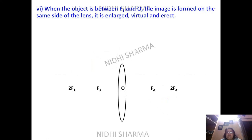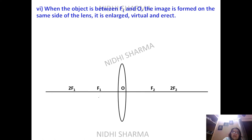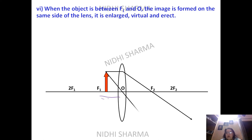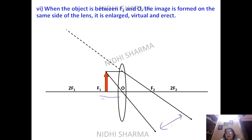The sixth and last case is the magnifying lens case, used even in small microscopes. When the object is between F and O, the parallel ray passes through focus and the other goes through the optical center. The two rays diverge and are forced to meet on the same side as the object, giving an enlarged, virtual, and erect image.